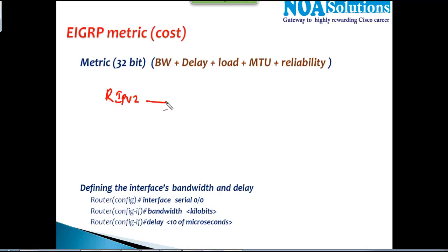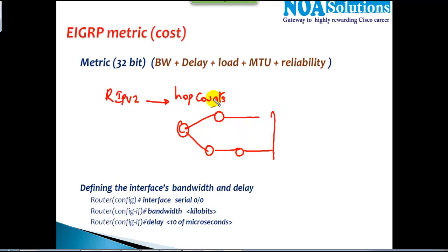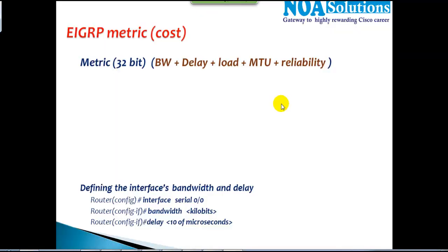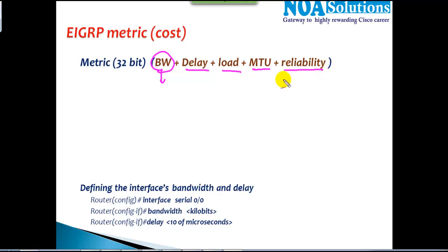RIP version 2 calculates the best route based on hop count. If you have two routes to a destination — one with one hop and another with two hops — RIP selects the least number of hops. RIP doesn't consider bandwidth or other factors. But EIGRP majorly uses bandwidth as the deciding factor, along with delay, load, MTU, and reliability — five different values EIGRP considers when calculating the best route.